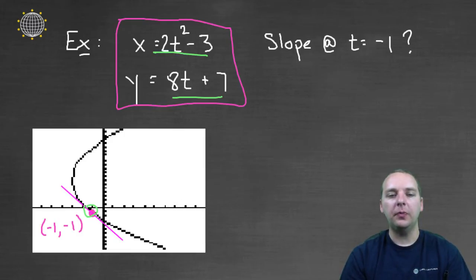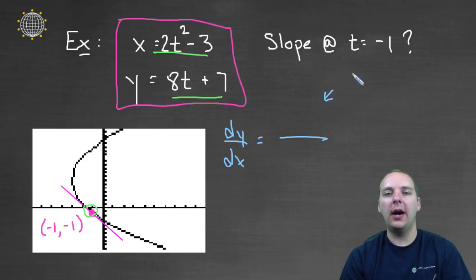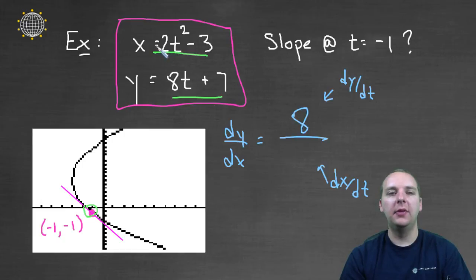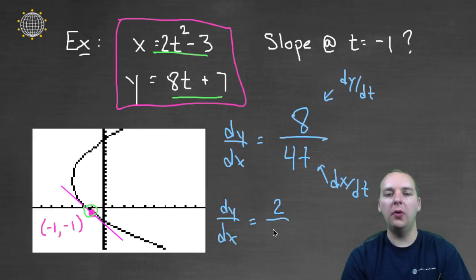So what I'll do is I will take dy dx to be the derivative of y, so this is the dy dt, and divide it by the dx dt. Okay, so let's do that. The derivative of y with respect to t would be 8, and the derivative of x with respect to t would be 4t. So we'll have dy dx equal to 2 over t because the 8 and the 4 are going to cancel.